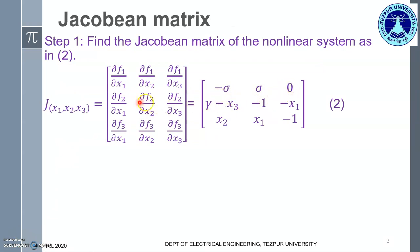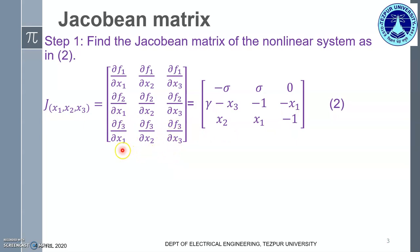Similarly, if we consider the second expression corresponding to x2 dot as f2 and go on to take partial derivatives with respect to x1, x2, and x3, we get gamma minus x3, minus 1, and minus x1. Similarly, for f3 corresponding to the expression of x3 dot, and we do partial derivatives with respect to x1, x2, x3, we get this particular expression.